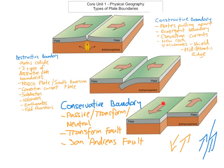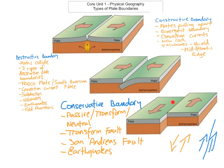One thing to note is that rock is neither being created nor destroyed at this type of plate boundary. At constructive plate boundaries new rock is created; at destructive plate boundaries rock is subducted and destroyed; but at conservative boundaries no rock is created or destroyed. A key feature here is earthquakes — lots of earthquakes occur due to friction built up along the transform fault. These tend to be shallow earthquakes, which are usually more severe because the focus is not very deep within the crust, meaning the epicentre is very close to the Earth's surface.